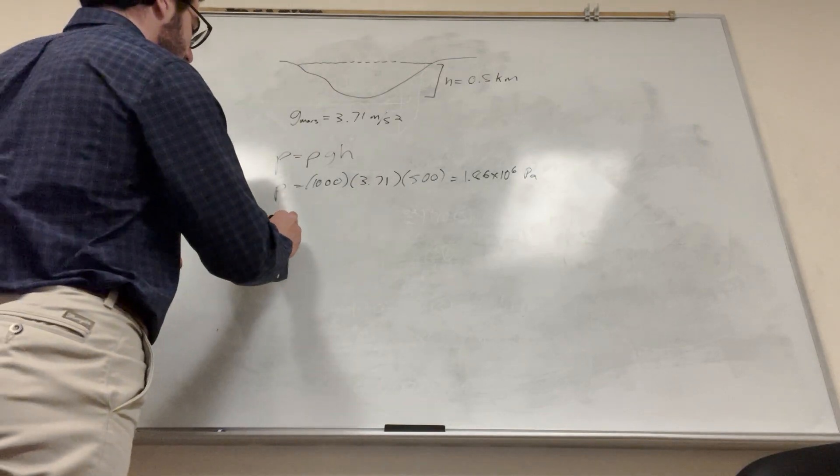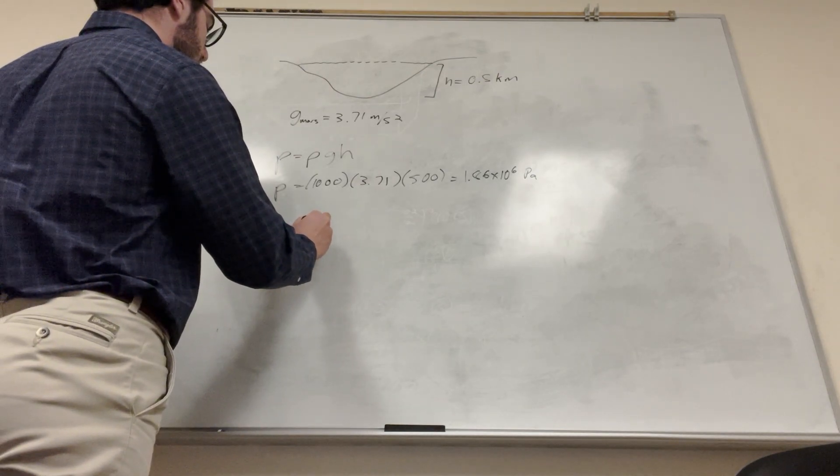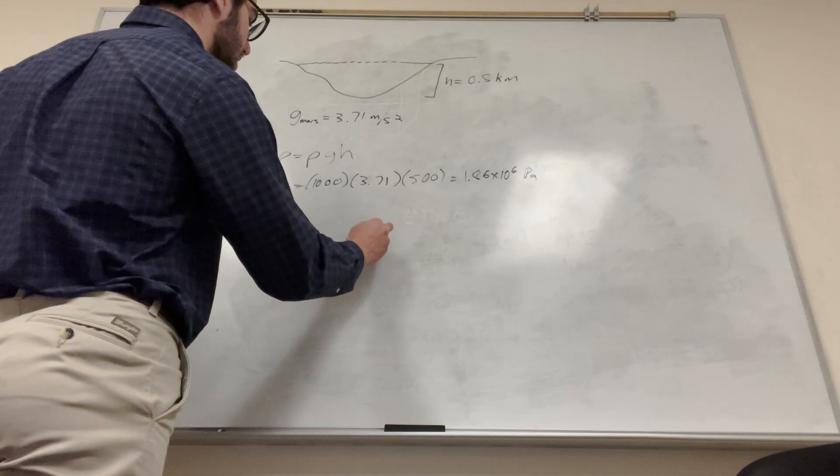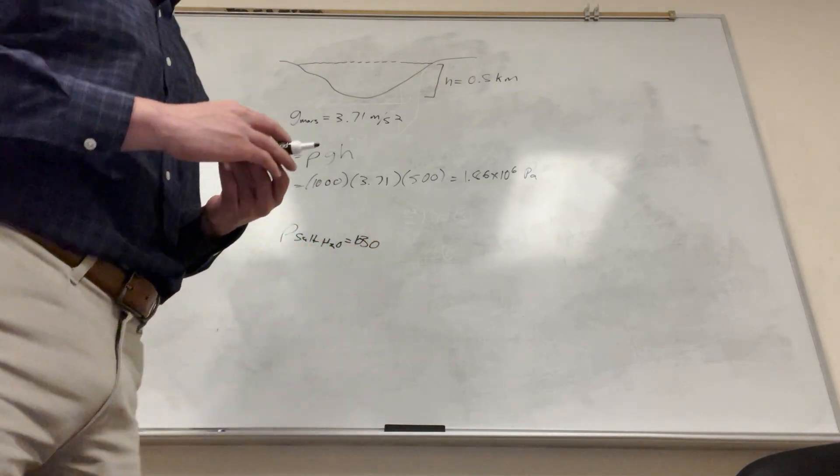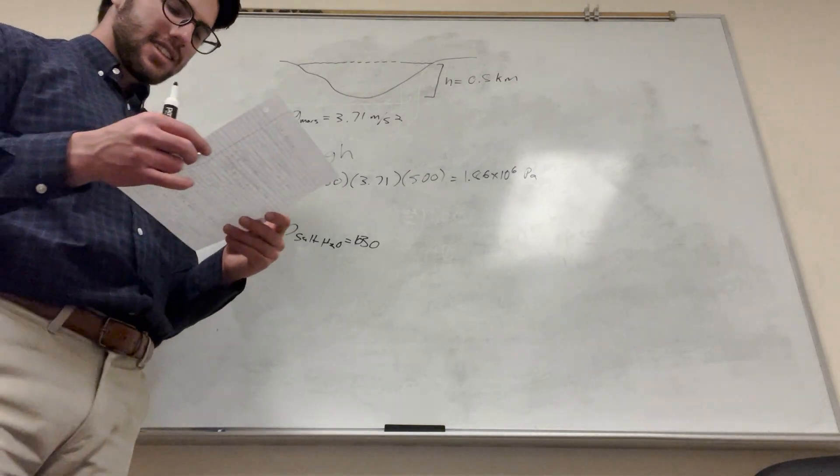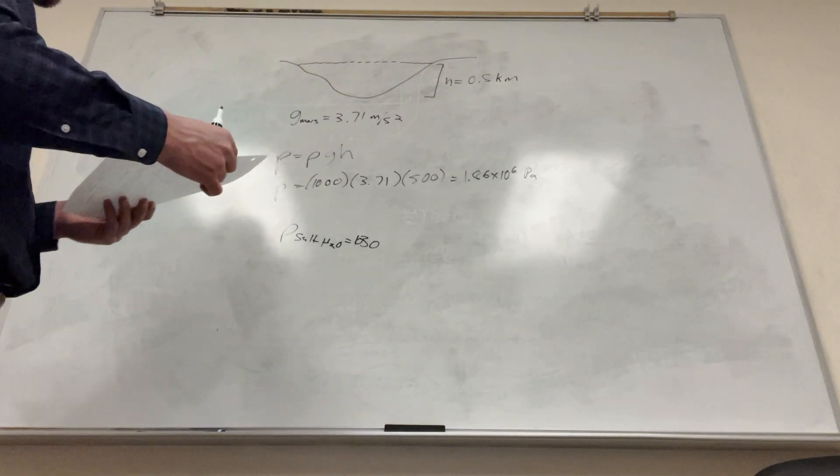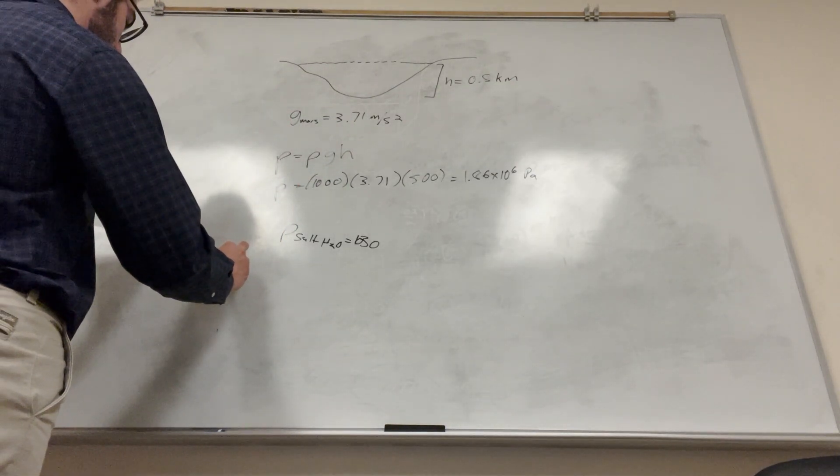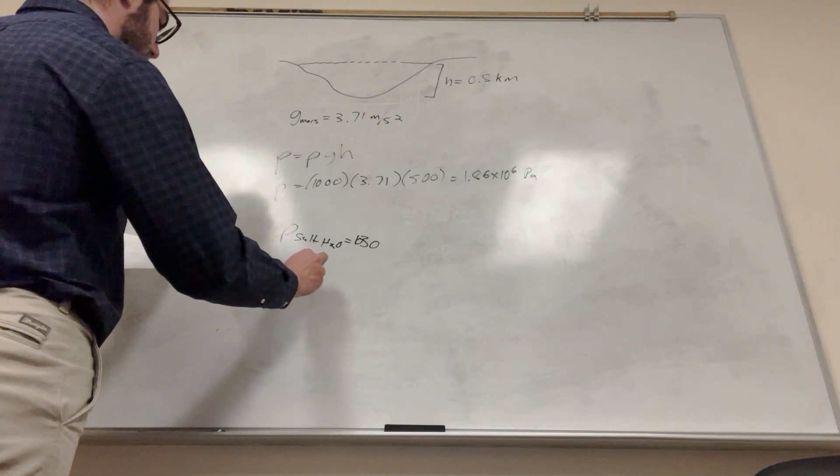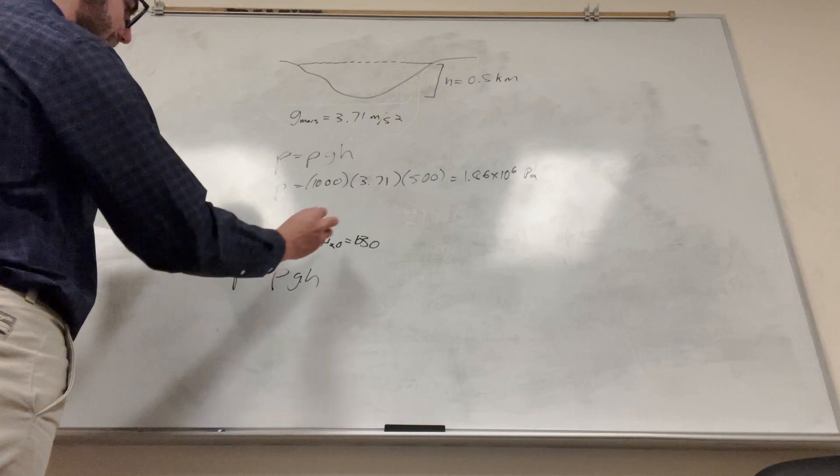...it says it's salt water. So the density of salt water is about 1030, which is about 30 more. It's just a tiny bit more dense than the water on Earth, or the water that's pure, I guess, deionized water. So we can say that pressure here is equal to density, gravity, height. But this is the gravity of Earth. This is the density of salt water.